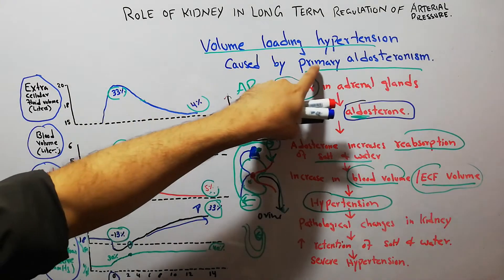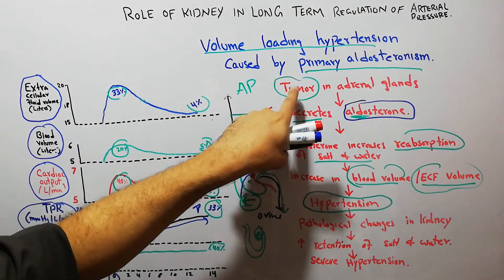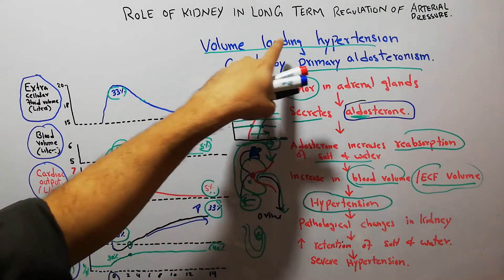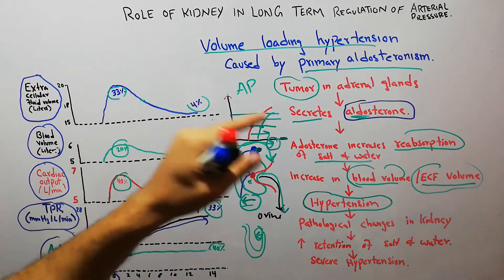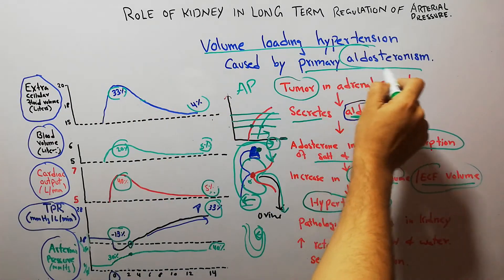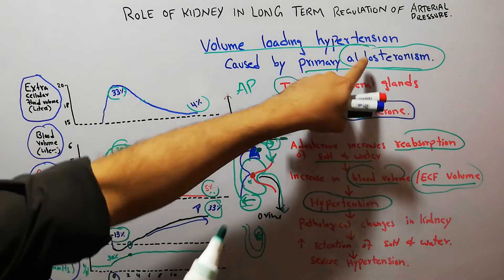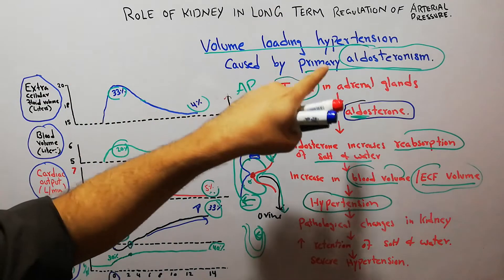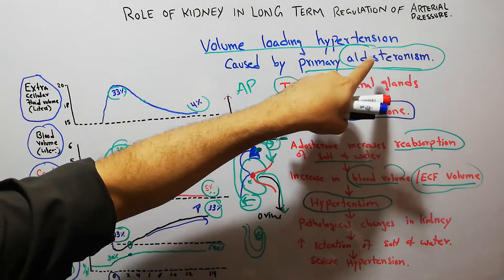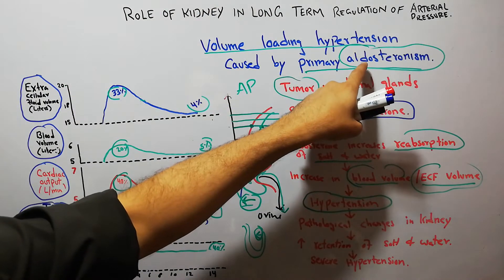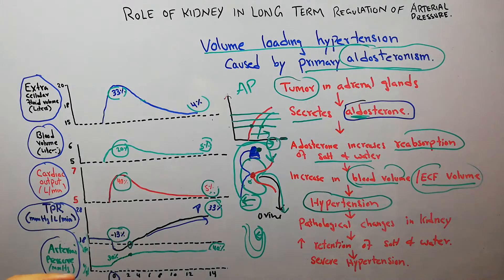Volume loading hypertension can occur in primary aldosteronism due to an adrenal gland tumor, but also in any condition that increases aldosterone levels in the body, or when steroids with similar functions to aldosterone are present.